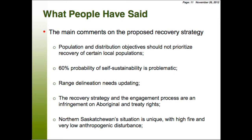The main things we heard from these 19,000 comments: population distribution objectives should not prioritize recovery of certain local populations. This came from the fact that we had self-sustaining and non-self-sustaining herds, with a two-tier process for non-self-sustaining herds — some we would try to make self-sustaining and some we would just try to stabilize. Many people didn't think that was appropriate. There were also many comments that the 60% probability of self-sustainability over 20 years was problematic.